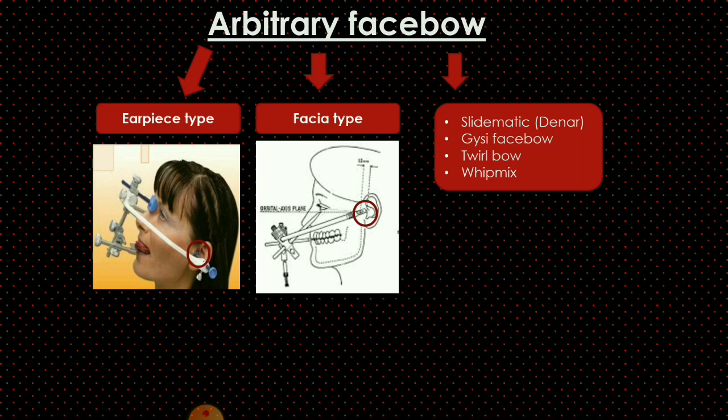Arbitrary face bows include the earpiece type, fascia type, slidematic type, Gysi face bow, 12-bow, and Whip Mix type of face bow. In the earpiece type, the external auditory meatus is used as the posterior reference point, and the rods are placed into the external auditory meatus. In the fascia type, a landmark over the skin is used as the posterior reference point, with rods placed over the skin of the face.